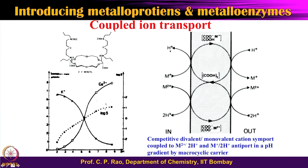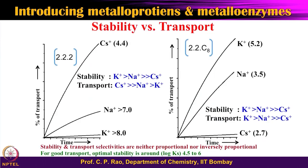Nature utilizes various chemical groups susceptible to pH — beyond pore size, number of ligating atoms, and lipophilicity/hydrophilicity — to achieve ion selectivity. Having understood log Ks well, let us compare log Ks with transport ability. We have two molecules: the 2,2,2 cryptand with all six oxygen atoms, and the 2,2,C8 cryptand with 4 oxygen atoms and one strand that is a fully carbon chain. We will examine time versus percent transport for each.